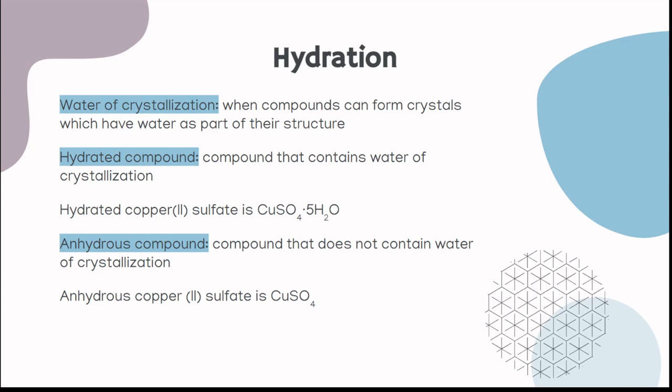So, we also have hydration. There is water crystallization when compounds can form crystals which have water as part of their structure. We have hydrated compounds that contain the water crystallization. There's hydrated copper sulfate, which would be copper sulfate. We put a dot, and then how many waters there are. The water is going to depend on the kind of molecule you have. There's also anhydrous compounds, which are compounds that do not have water crystallization. Most compounds are anhydrous that you work with in chemistry.